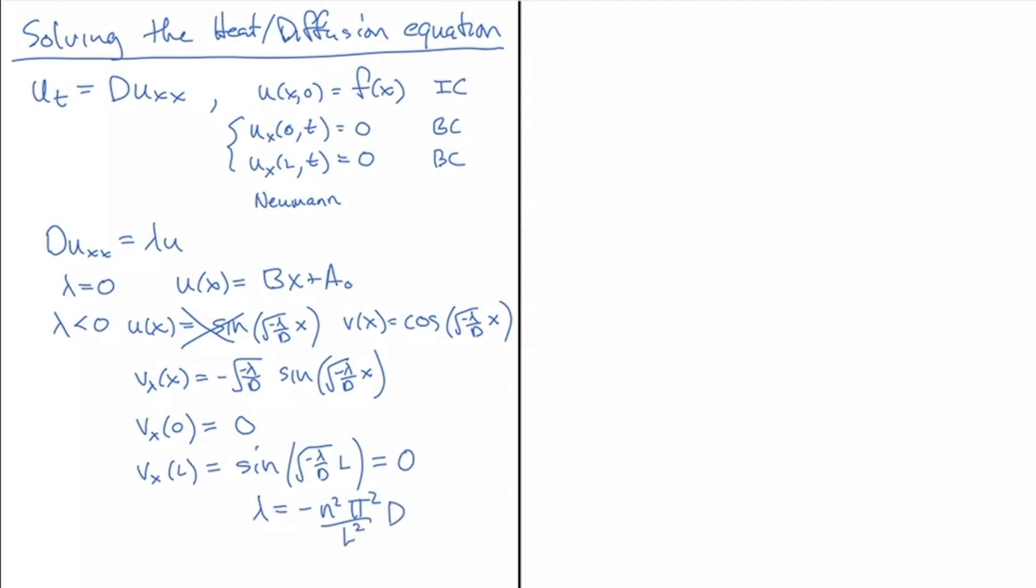And again, these are going to be the eigenvalues that, the only eigenvalues that satisfy this boundary condition. So, now we have a list of functions and eigenvalues, and I'll put a subscript in here again. And so, the solution that we're interested in finding is going to be built from a whole collection of these cosine functions, and maybe these ones here.